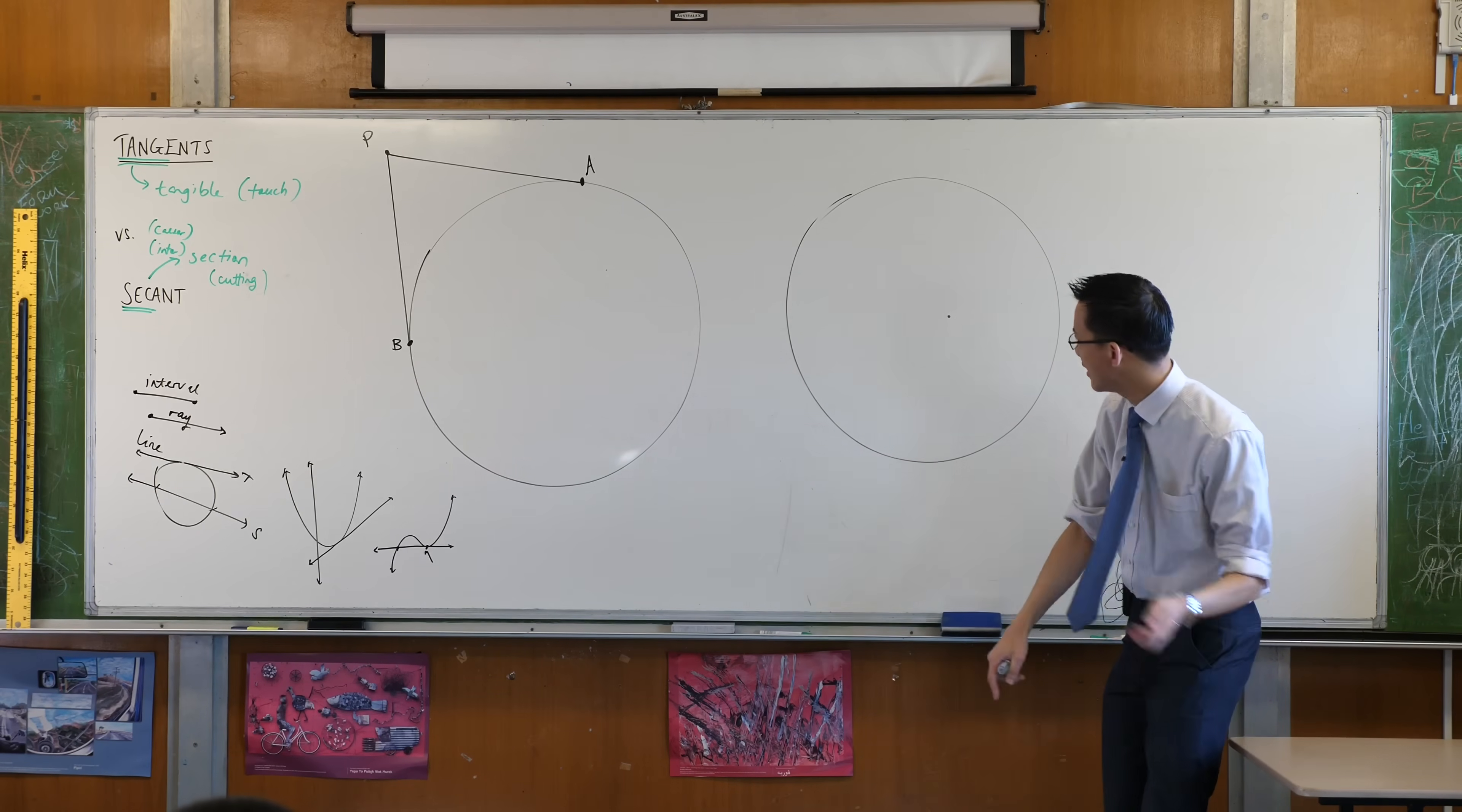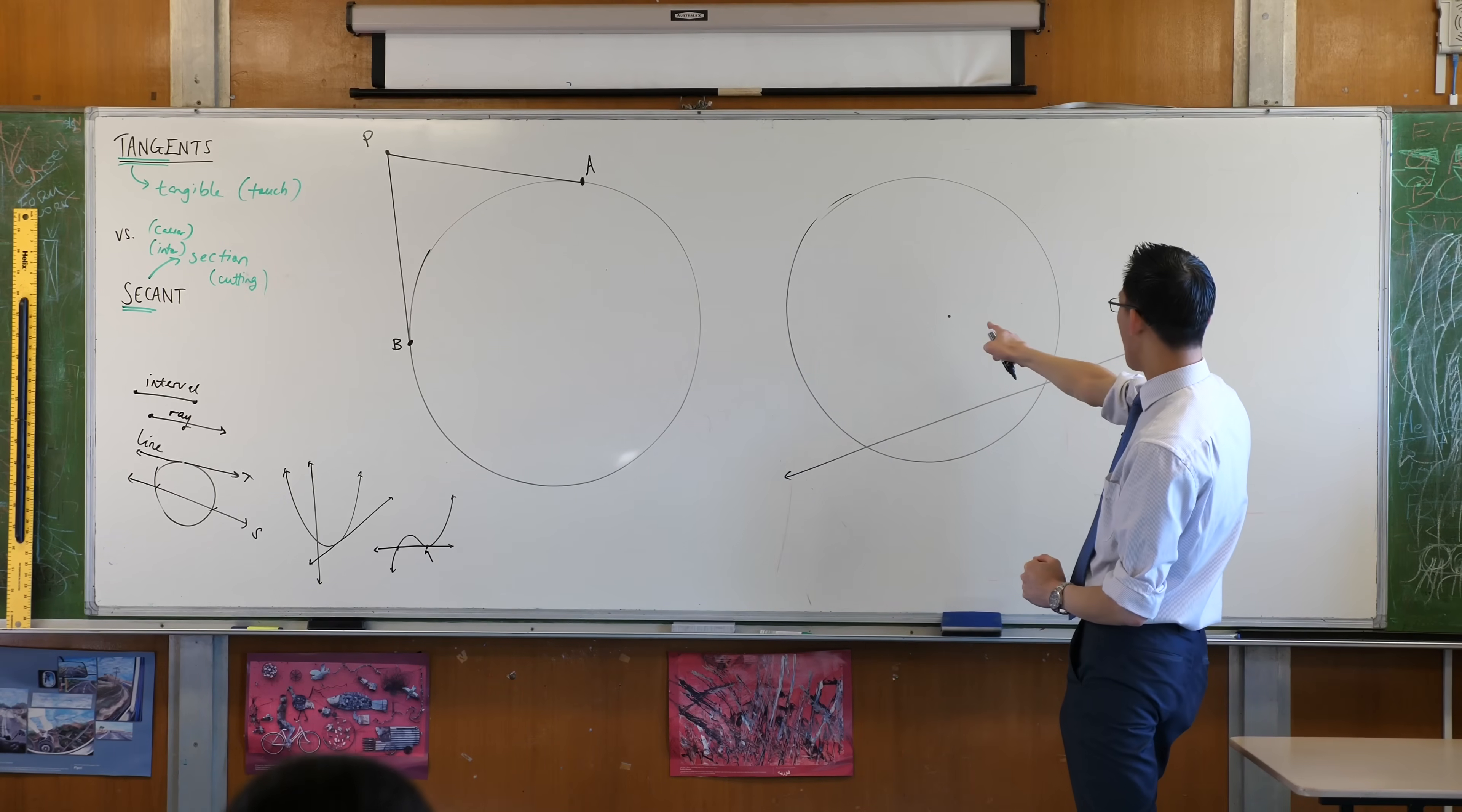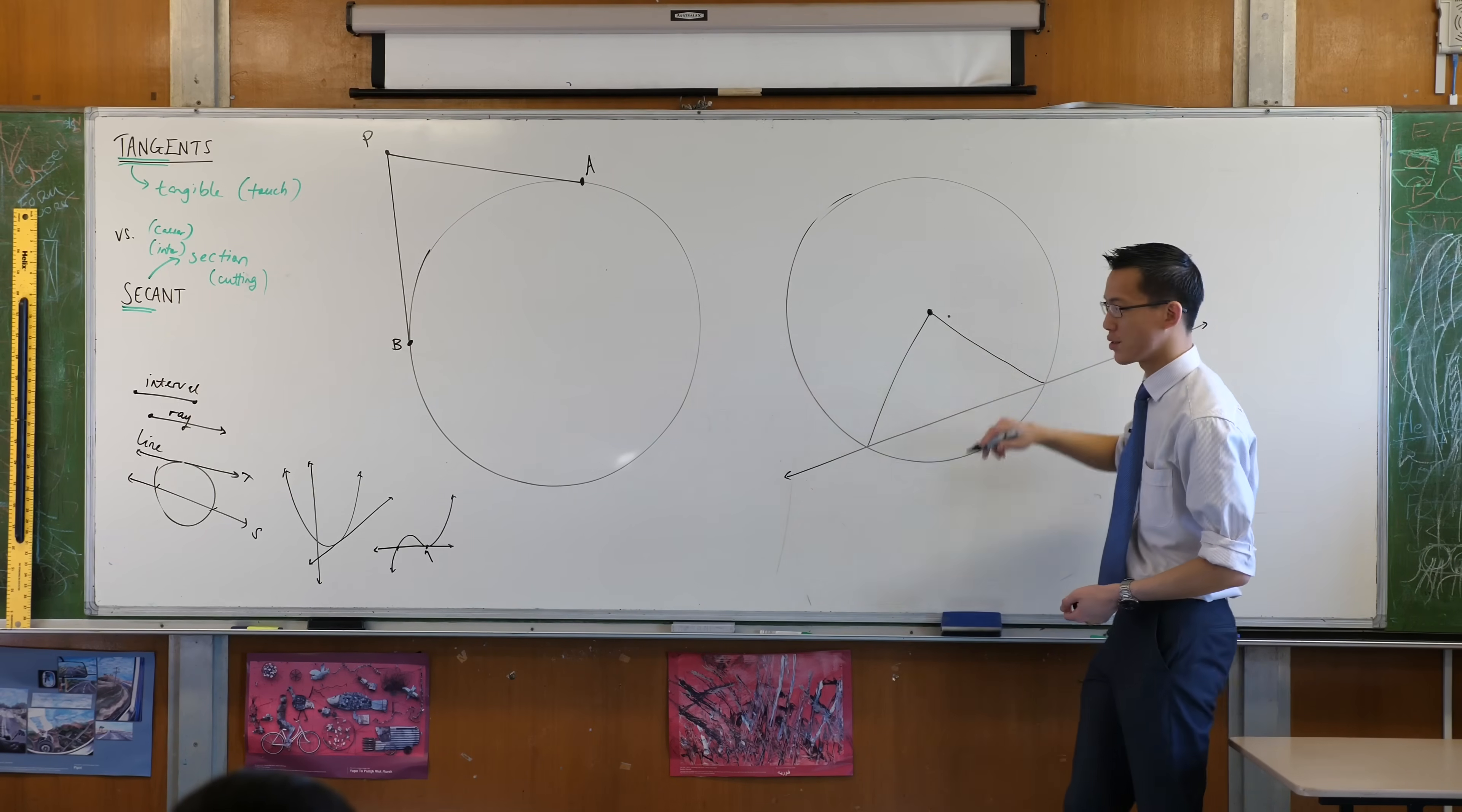So on your second circle, I want you to draw, this is a bit tricky, I want you to draw a secant, something like this. Draw me a secant and then that's actually not my whiteboard marker, that's actually a dent in the whiteboard. I want you to put the center of your circle onto here. Then I want you to connect up some radii, like so.